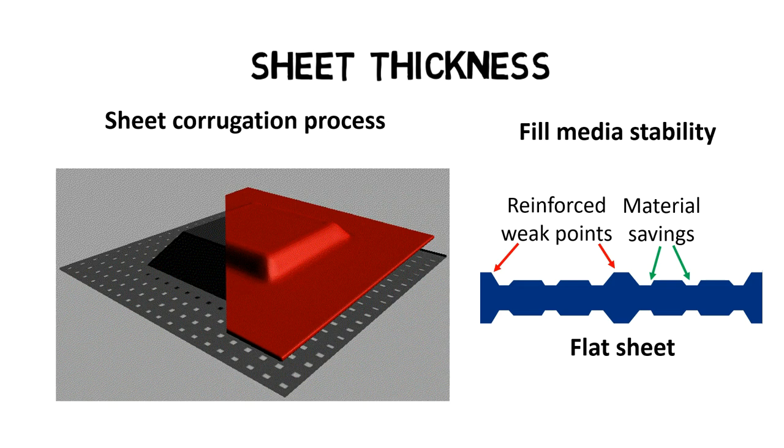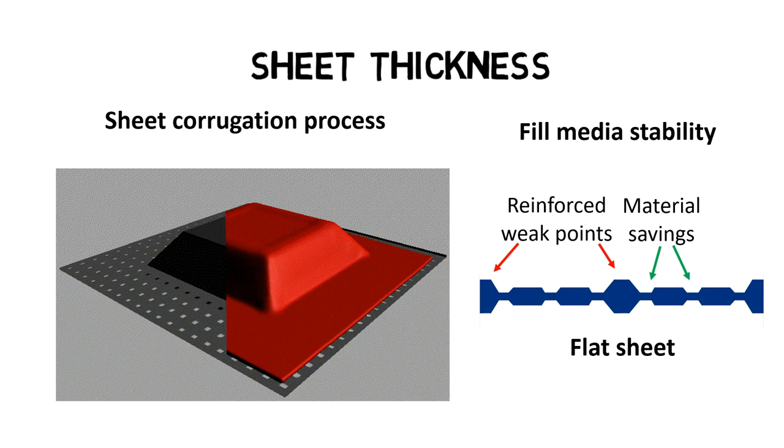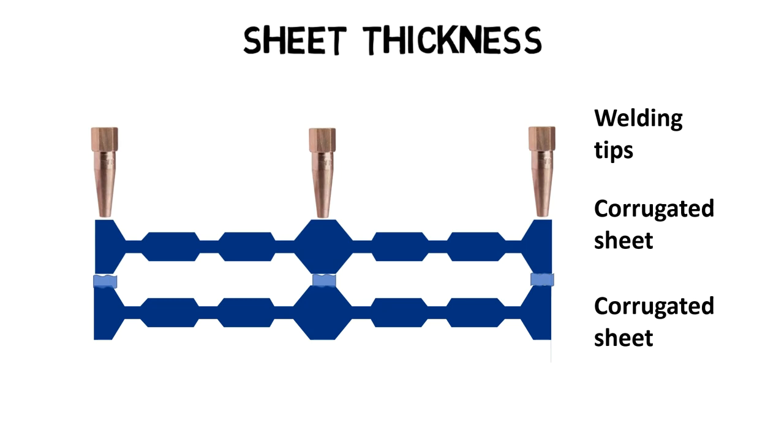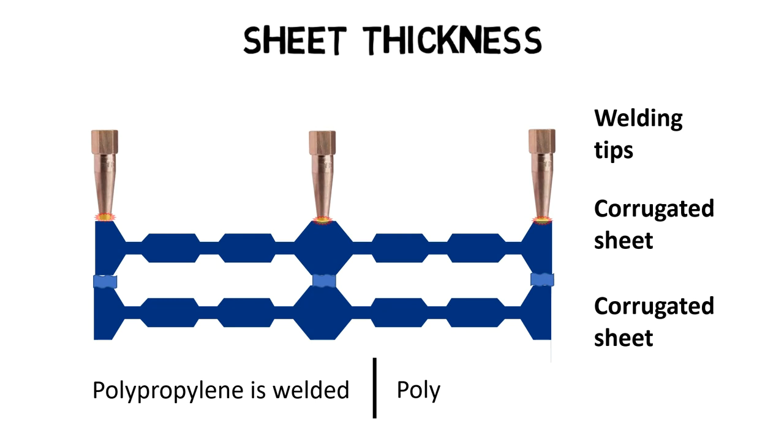A good example for different fill media thicknesses are the layers within a trickling filter. Please click on the above link for more information. The corrugated sheets are either welded or glued together at dedicated connection points to build plastic fill media blocks. Polypropylene is very difficult to glue and is therefore always thermally welded, whereas PVC can be glued together easily.